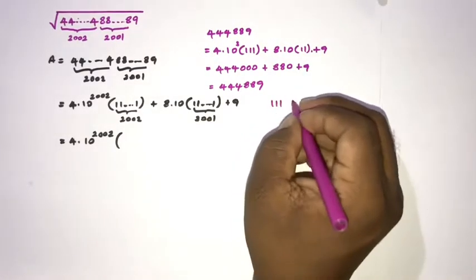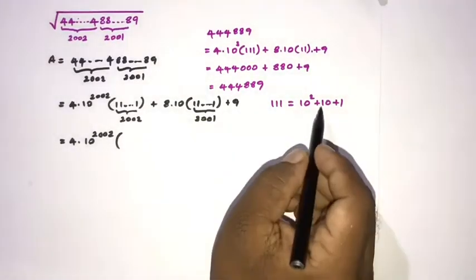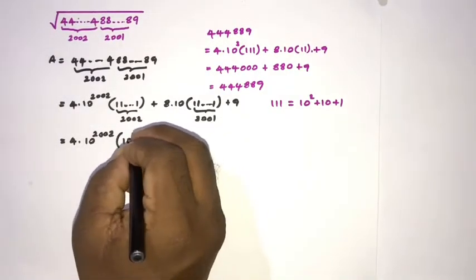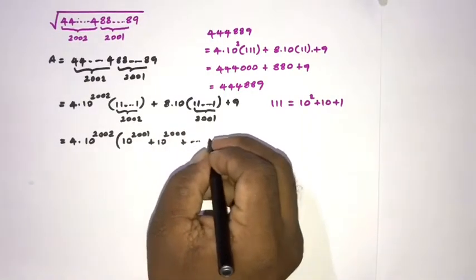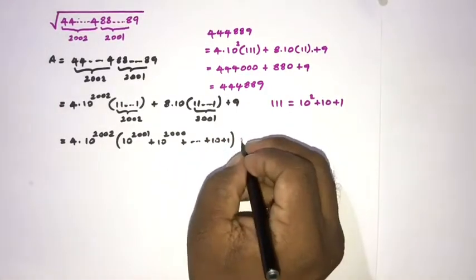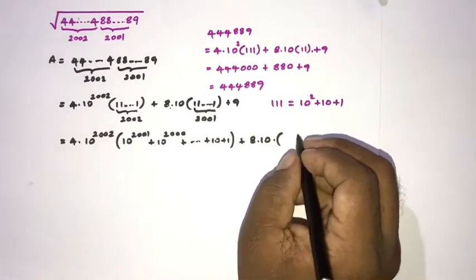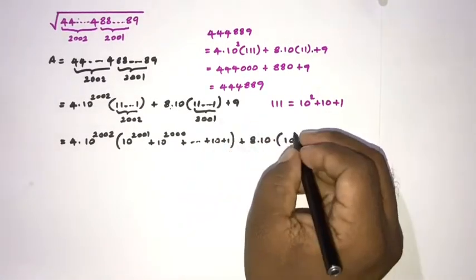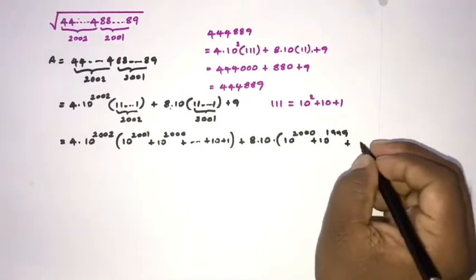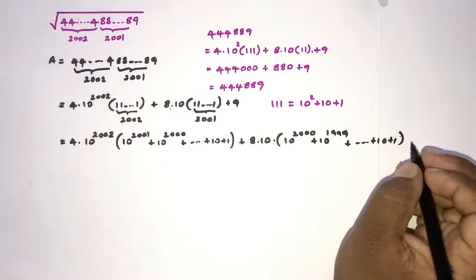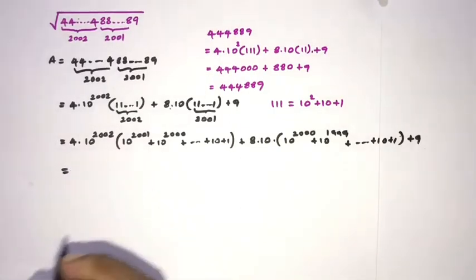For example, 111 equals 10² + 10 + 1. According to this pattern, the repunit with 2002 ones equals 10^2001 + 10^2000 + ... + 10 + 1. Then for the 8 term, we have 8 times 10 times the repunit with 2001 ones, which equals 10^2000 + 10^999 + ... + 10 + 1, plus 9.